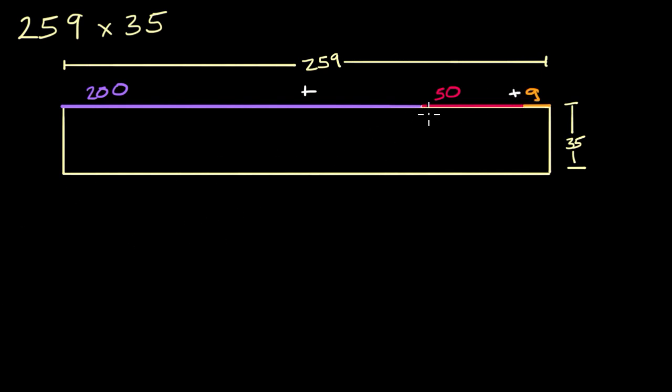And I can divide this rectangle into these areas. So one way to think about it is that this area over here is going to be 200 times 35. This area is going to be 50 times 35. And this area is 9 times 35. Well, as I said, I could do the same thing with 35.